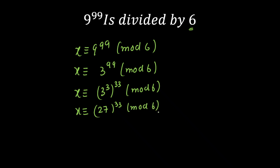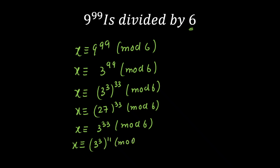Now 27 is bigger than 6, so I can divide it. The nearest multiple is 24, so the remainder will be 3. Therefore x is congruent to 3 raised to the power 33, mod 6. As you can see, this number is continuously decreasing. Again I will make this as 27, and I can write x is congruent to 3 raised to the power 3, whole raised to the power 11, mod 6. Again, 3 raised to the power 3 is 27, and 27 divided by 6 gives remainder 3 again. So we get x is congruent to 3 raised to the power 11, mod 6.